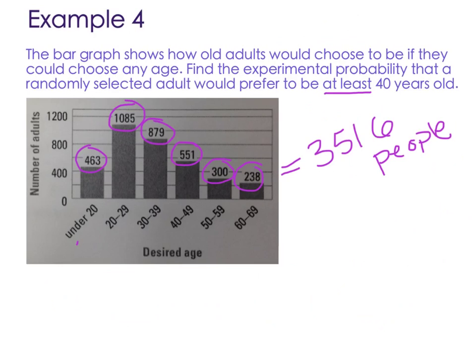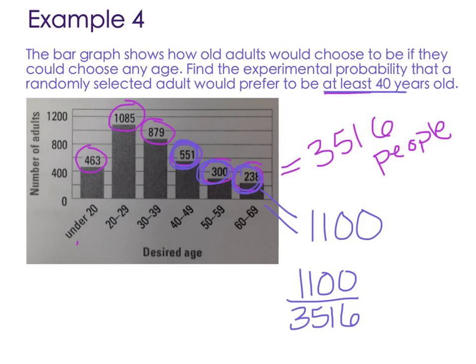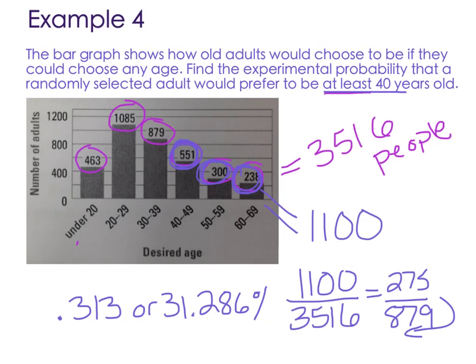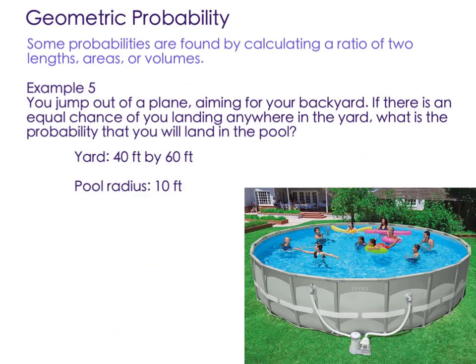Now we want to look at the number of people who choose to be at least 40. So these people and these people and these people choose to be at least 40. So that adds up to 1,100. So the probability is 1,100 people want to be at least 40 out of 3,516 surveyed. And then you can reduce that fraction. You could give it as 275 over 879. Or 0.313, which is about 31.286%. So about a little less than a third of the people would wish to be at least 40 years old.